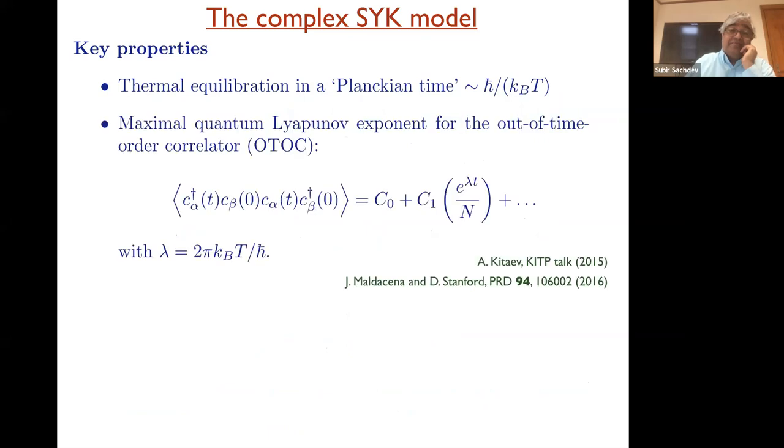More recently, people working in quantum gravity especially have focused attention on what they call the out-of-time-order correlator. And this correlator measures the growth of quantum chaos. And they define this exponent lambda, which is this quantum Lyapunov exponent. And this model has a property that it saturates the largest possible value that's allowed by just some semi-rigorous quantum mechanical arguments.